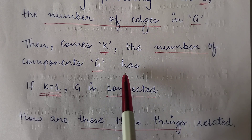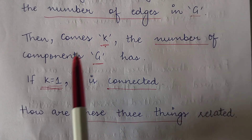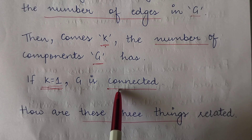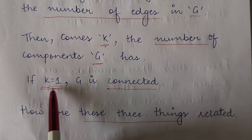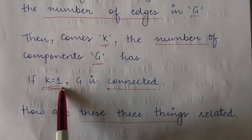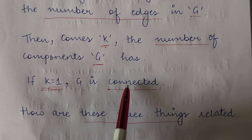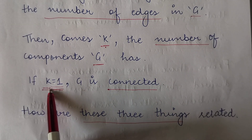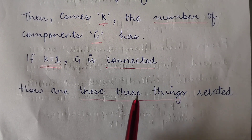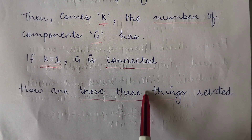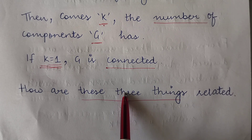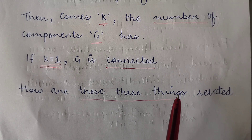Now if a graph G is connected, then it will have only one component, that means the graph itself. So if G is connected, K equals one — that means the number of components will be one, and that component will be the graph itself. So how are these three things related? The three important terms that come to mind when we talk of a graph are the number of vertices N, the number of edges E, and the components of the graph K.